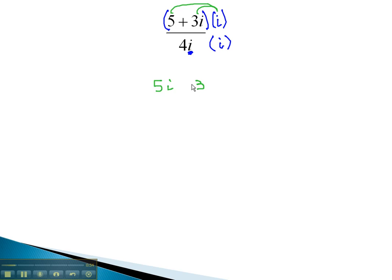Recall that i squared changes the plus 3 to a minus 3. This is because i squared is equal to negative 1. 3 times negative 1 is negative 3.